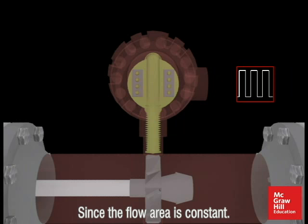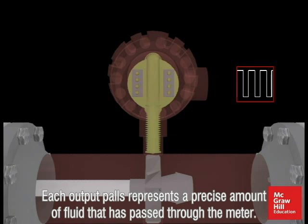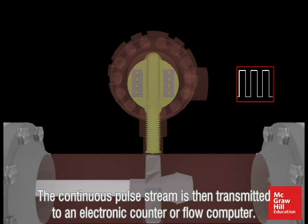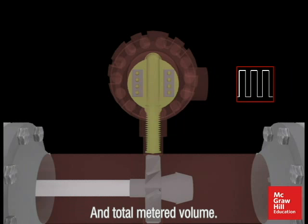Since the flow area is constant and the rotor velocity is directly proportional to the flow velocity, each output pulse represents a precise amount of fluid that has passed through the meter. The continuous pulse stream is then transmitted to an electronic counter or flow computer to indicate both instantaneous flow rate and total metered volume.